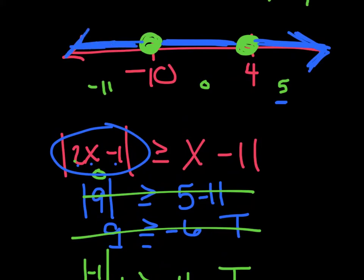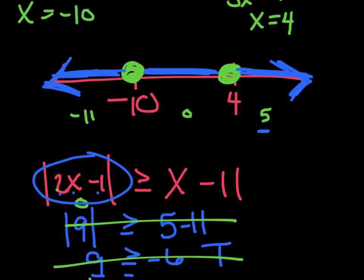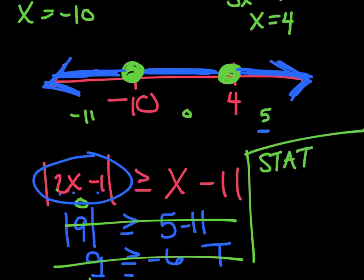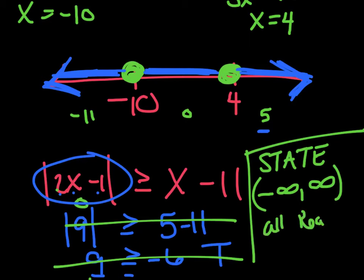We ended up shading everywhere on this one — don't just assume the shading will alternate. The answer goes from negative infinity to positive infinity, with parentheses since you can't reach infinity. Or you could say all real numbers. Don't assume once it goes one way it will flip flop — make sure you check.